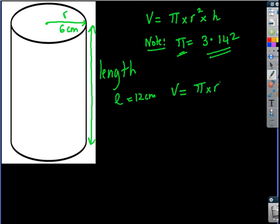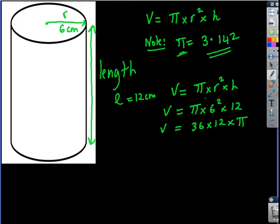V is equal to π times r squared times h. So I'm going to say that V is equal to π times r, which is 6. So I'm going to write 6 squared and h, which is equal to 12. And now it's just a matter of doing the sums. 6 squared is equal to 36 times 12. So that's 36 times 12 times the π. And I've just put the π towards the end to make my life easier.